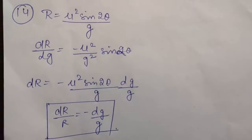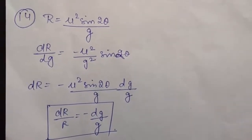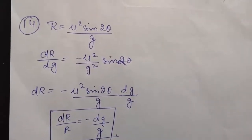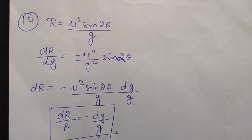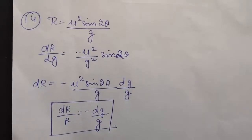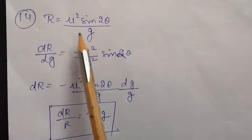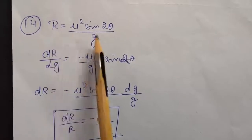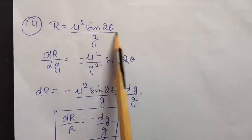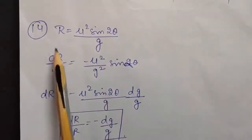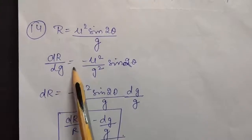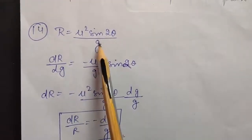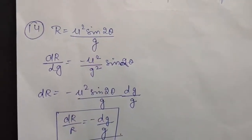Question number 14: if a projectile has constant initial speed and angle of projection, find the relation between the changes in horizontal range due to the change in acceleration due to gravity. The formula of horizontal range is R = u² sin 2θ / g. We calculate the change in R with respect to change in g by differentiating with respect to g. This gives dR/dg = u² sin 2θ times (−1/g²).